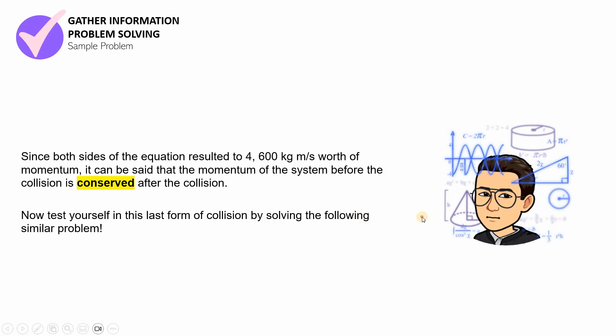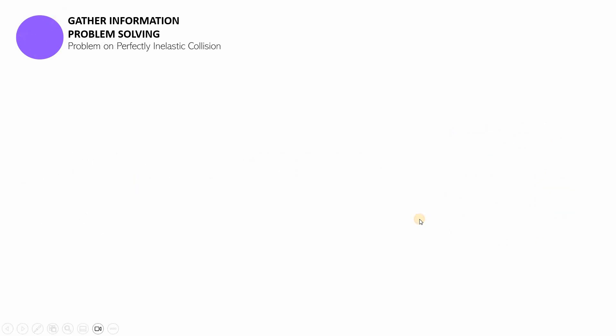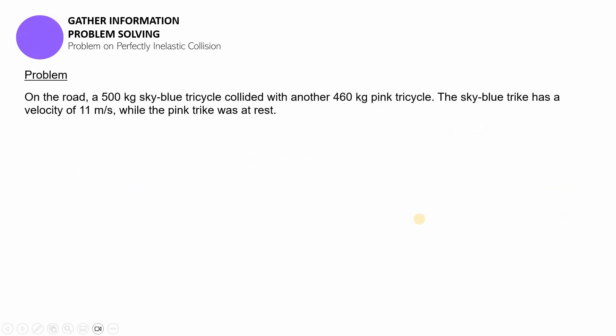In this problem, on the road a 500 kilogram sky blue tricycle, so this time it's 500 kilograms, collided with another 460 kilogram pink tricycle. The sky blue tricycle has a velocity of 11 meters per second while the pink trike was at rest. So yeah, the situation is quite similar to the previous problem, wasn't it?